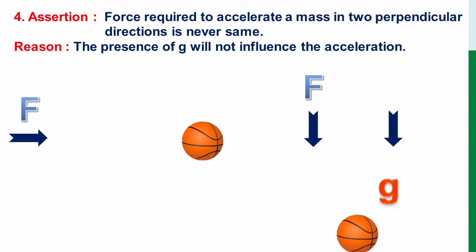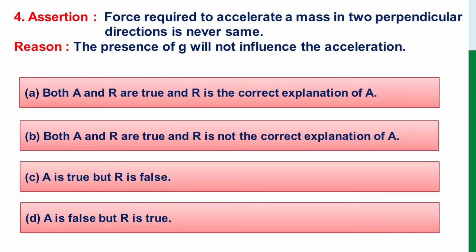So that means the acceleration of the ball will be more when it is falling down than when it is moving in a linear way. So definitely acceleration due to gravity will be having an influence in that fall. So that means the option here also is option C. A is true but R is false.